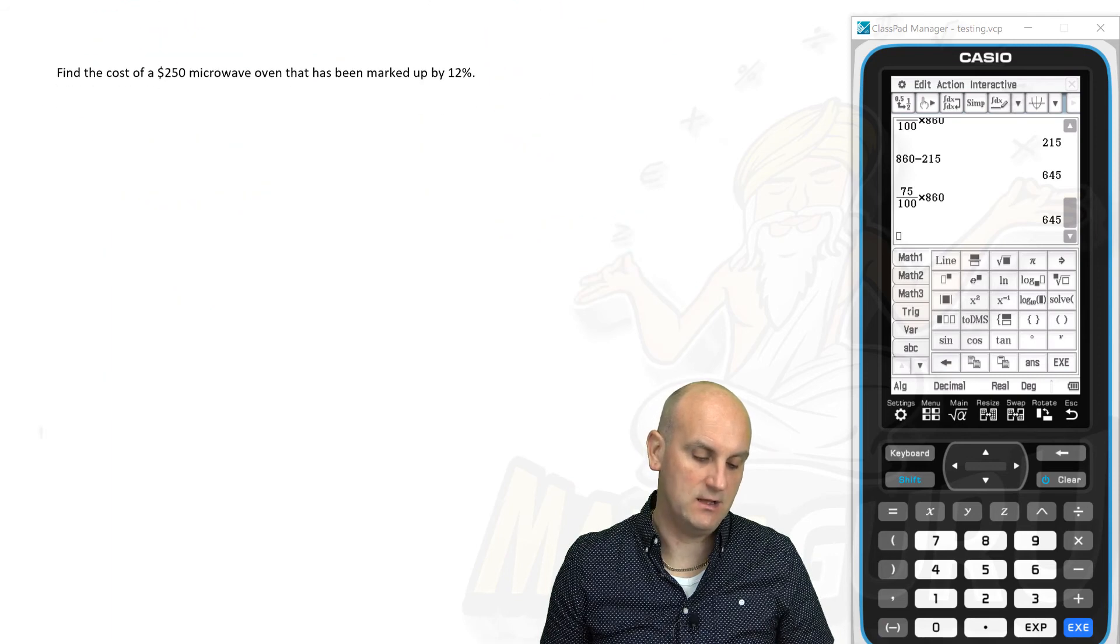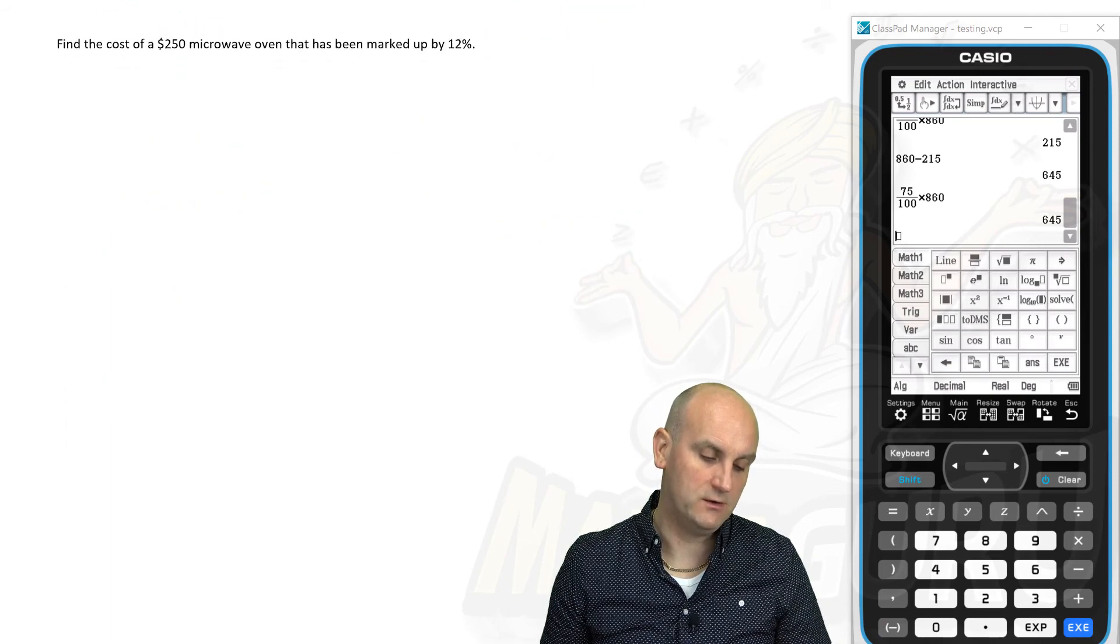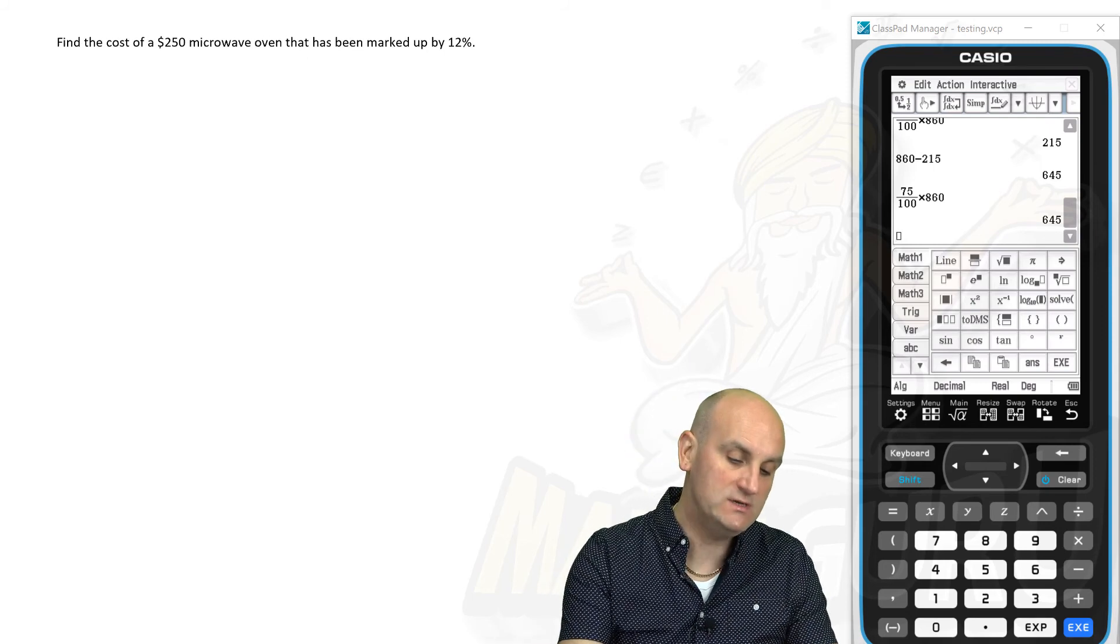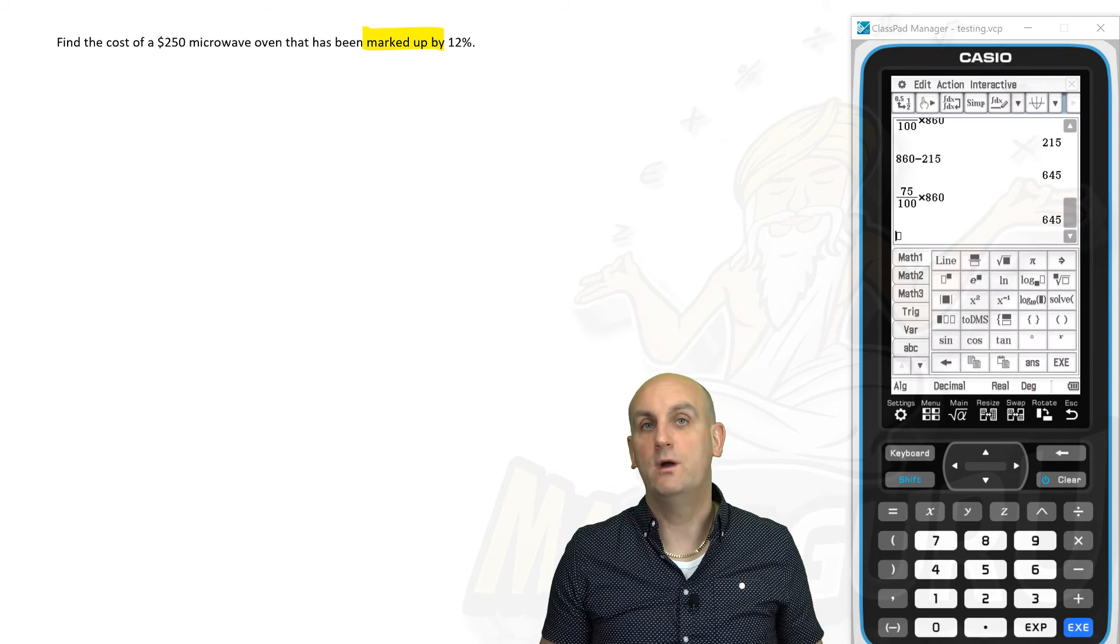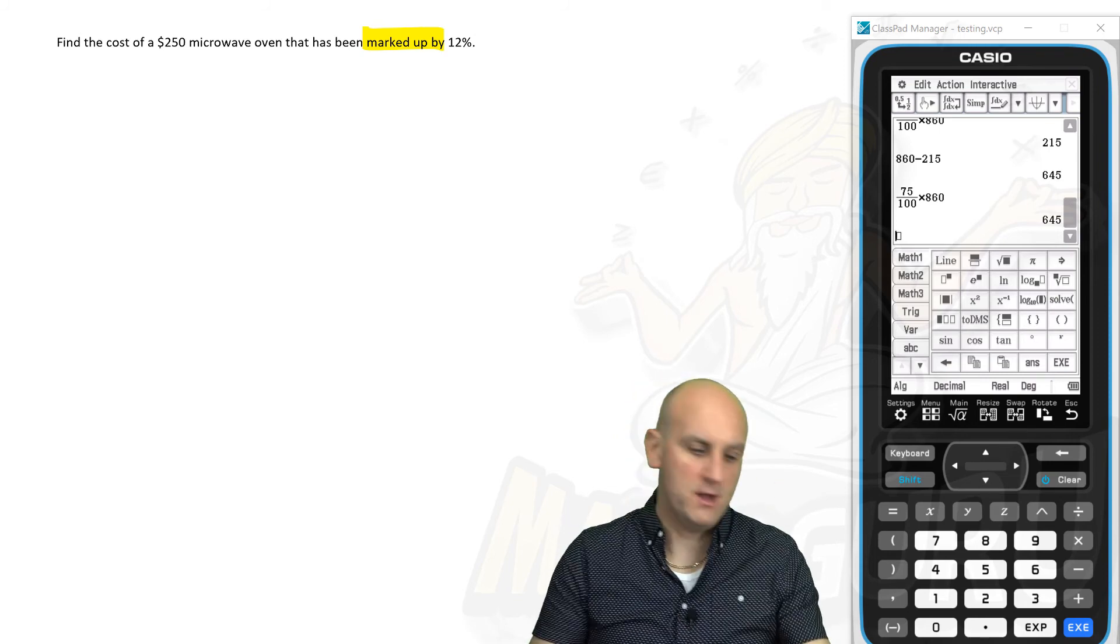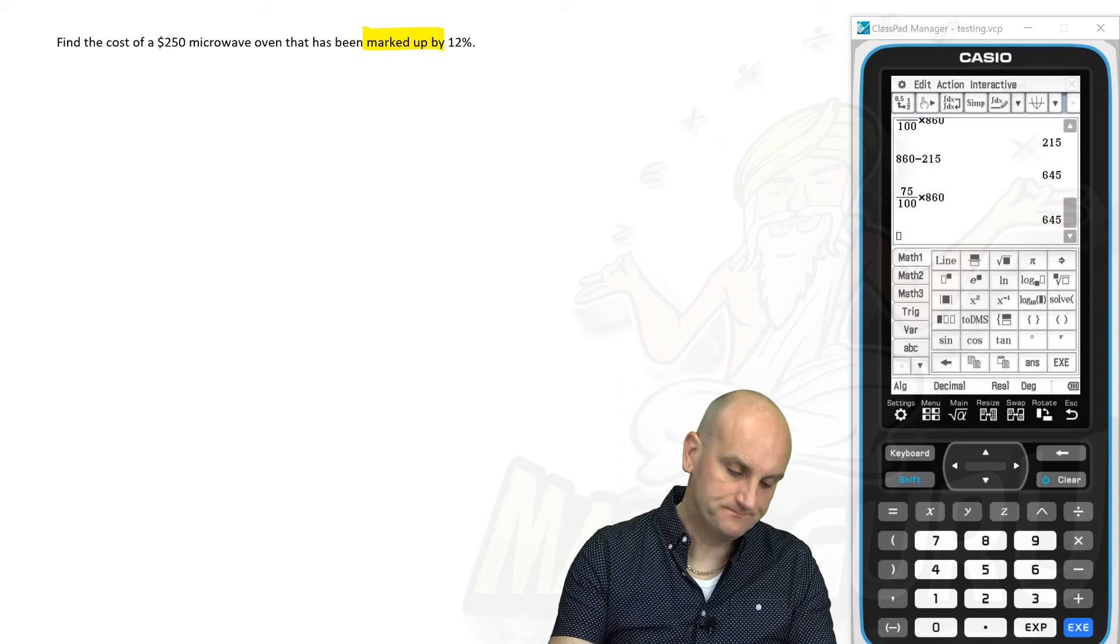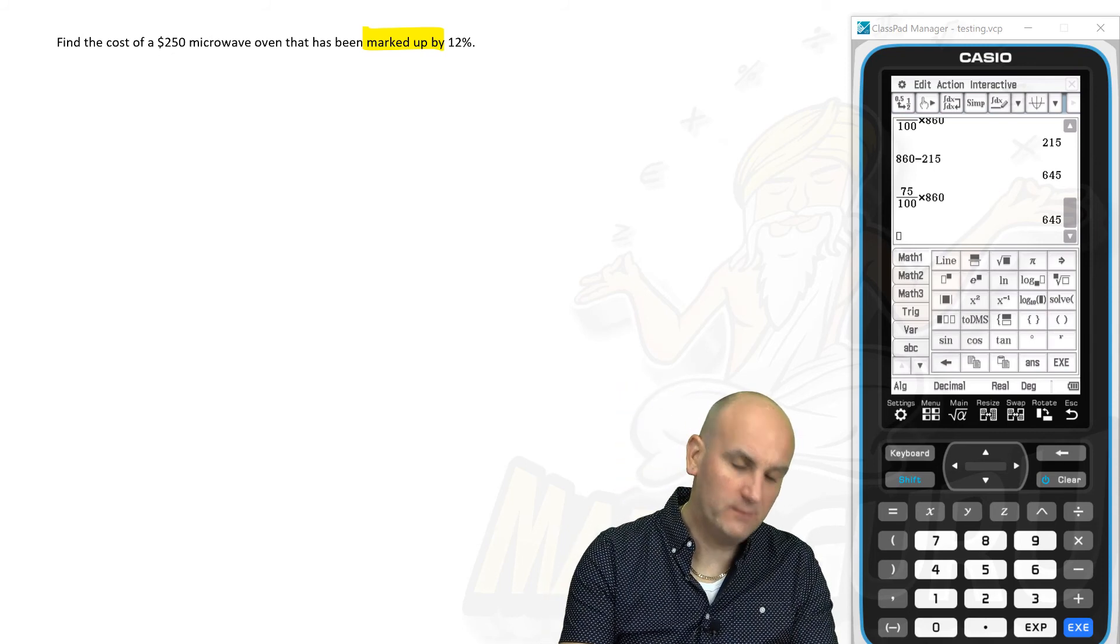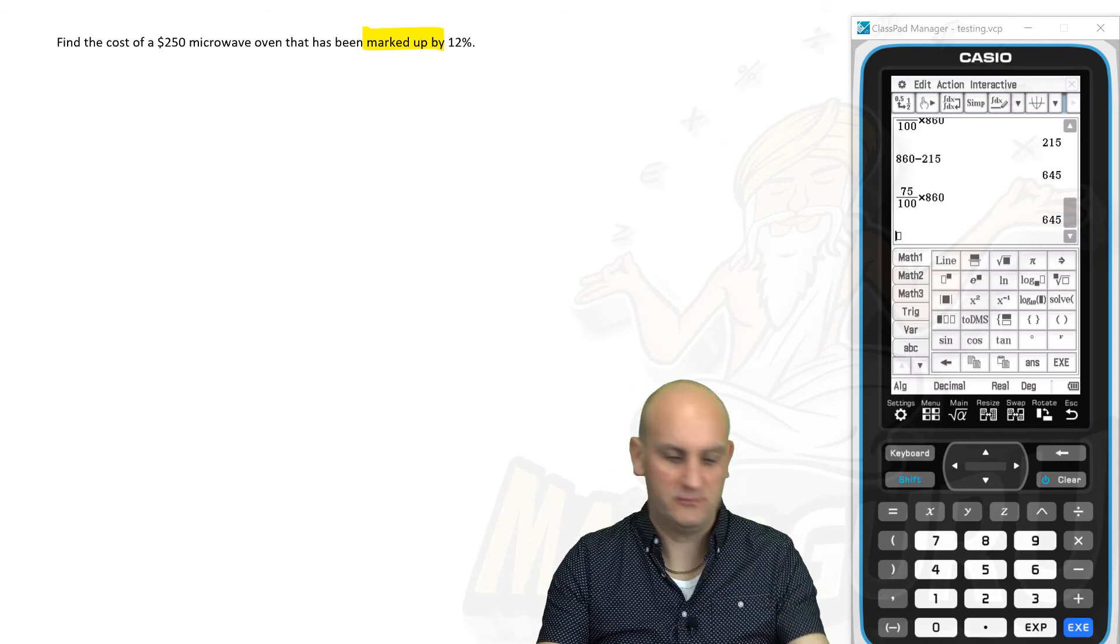Last example, I think. Find the cost of a $250 microwave oven that has been marked up. And again, the language here is irritating because the hardest part here is you've got to try and work out whether it's marked up or marked down and what that actually means. Well, marked up means it's increased. So I'm just going to do it that second way. I'm going to do it my love way. Sorry if you want both methods for this one.